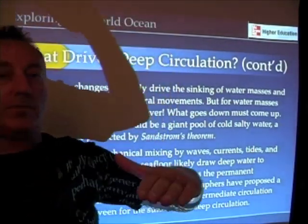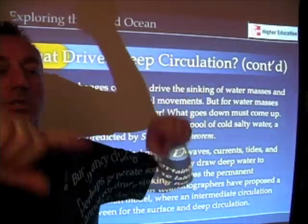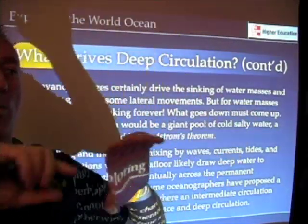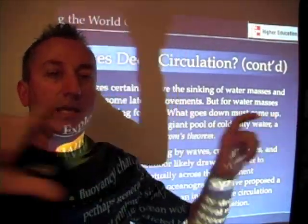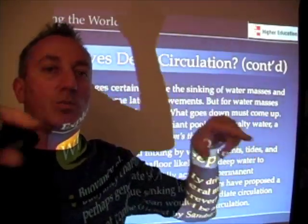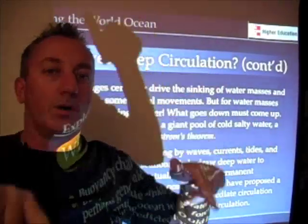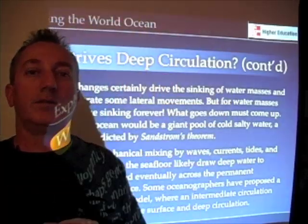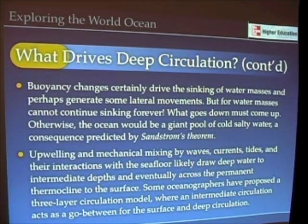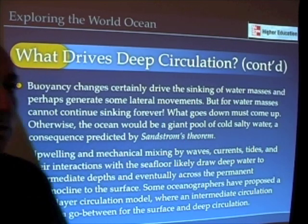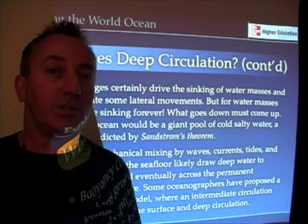Some oceanographers prefer a three-part system: a surface circulation, a very deep circulation, and then exchanges across intermediate depths that regulate the exchange of water from deep to surface waters. That intermediate boundary is kind of where all the action is — where water is pulled up or sent down, like a conveyor belt system with three levels. As we make more measurements of the world ocean circulation, some of these questions will begin to be answered, and we can move from the theoretical to the observational.